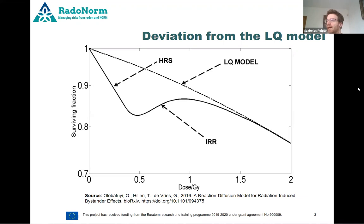It starts with a much bigger steepness, and after a local minimum, if we start to increase the dose, the surviving fraction actually goes up to a certain point. At high doses above one Gray it starts to follow the LQ model again. This region is what we call hypersensitivity and induced radioresistance.